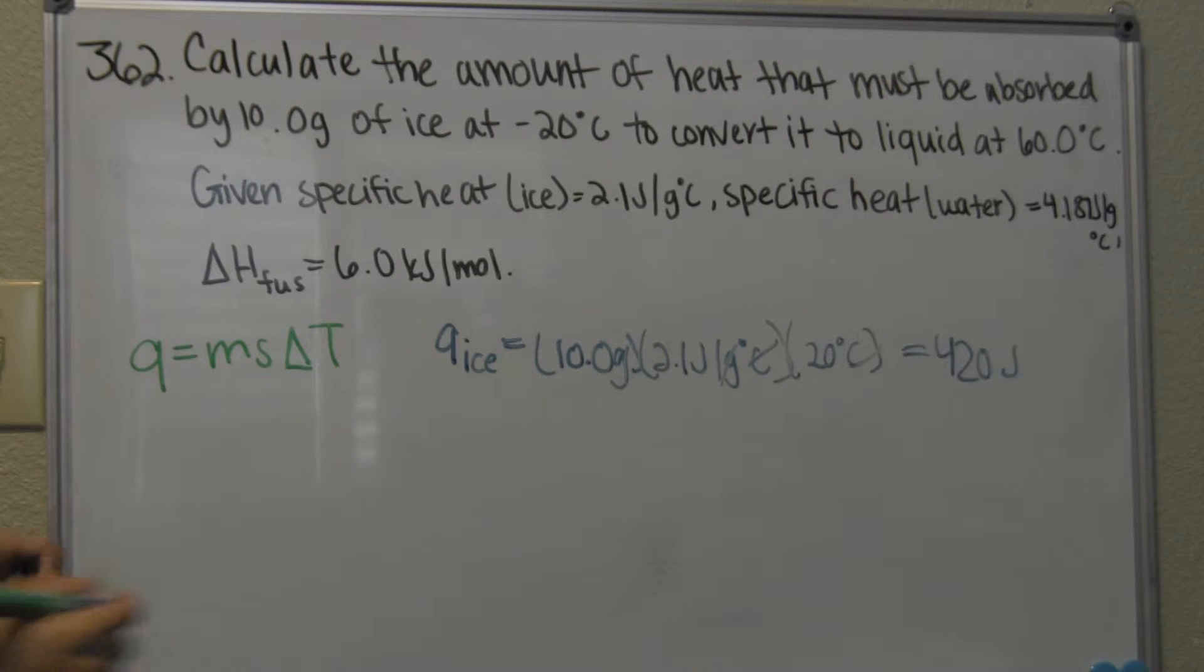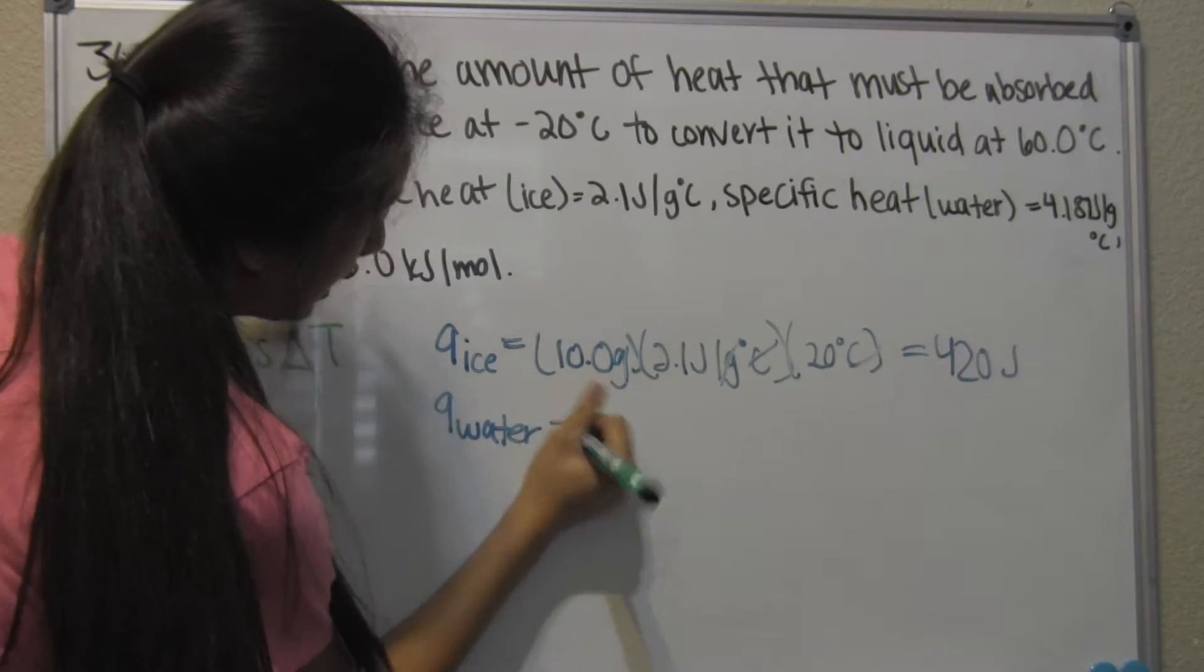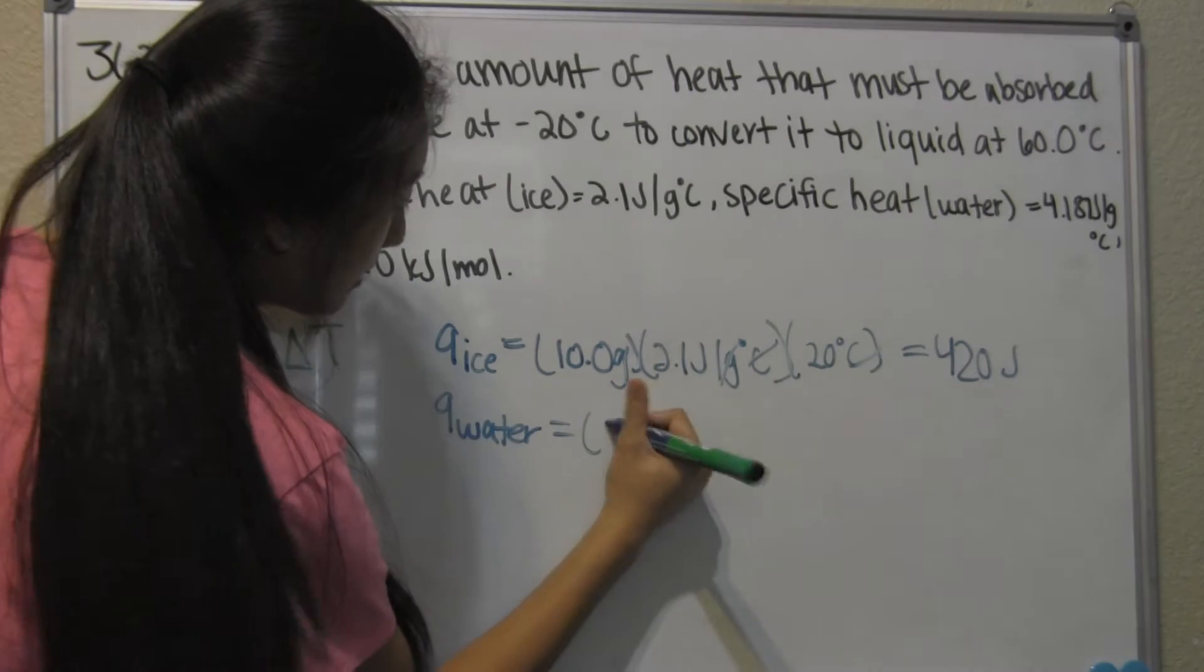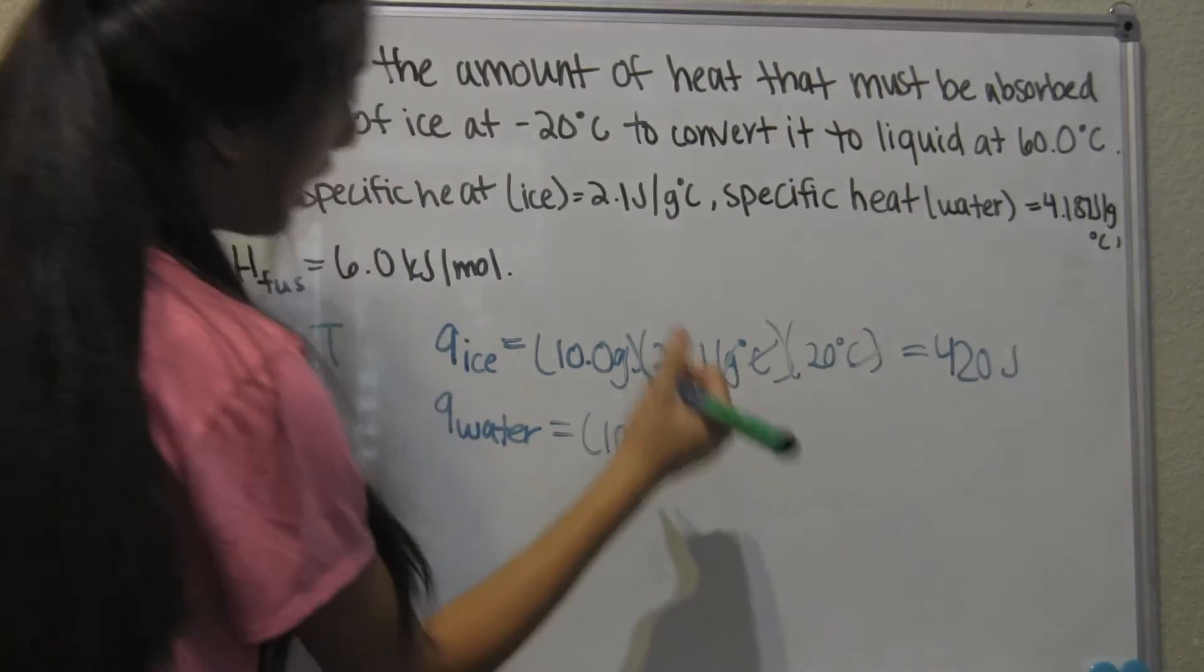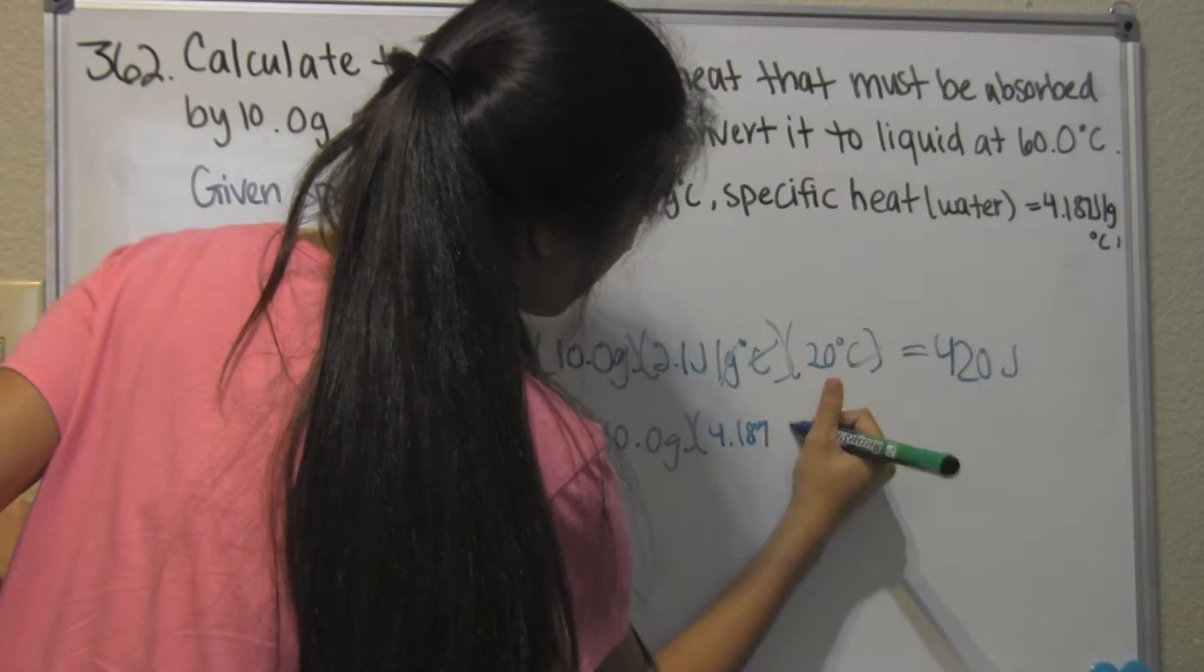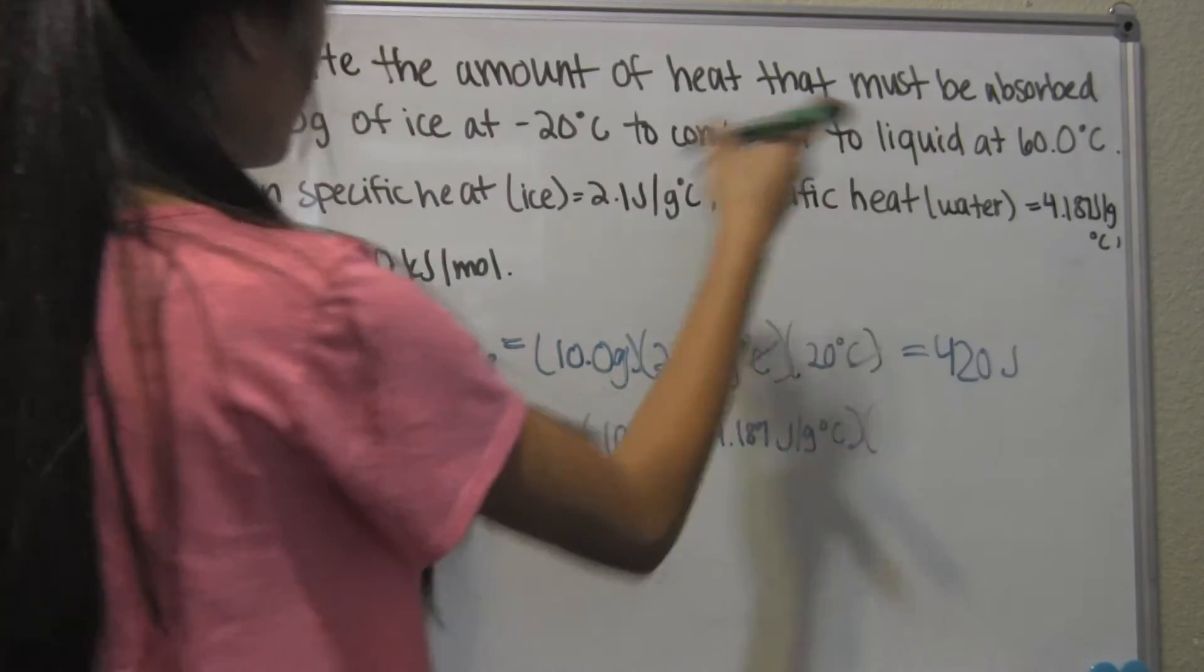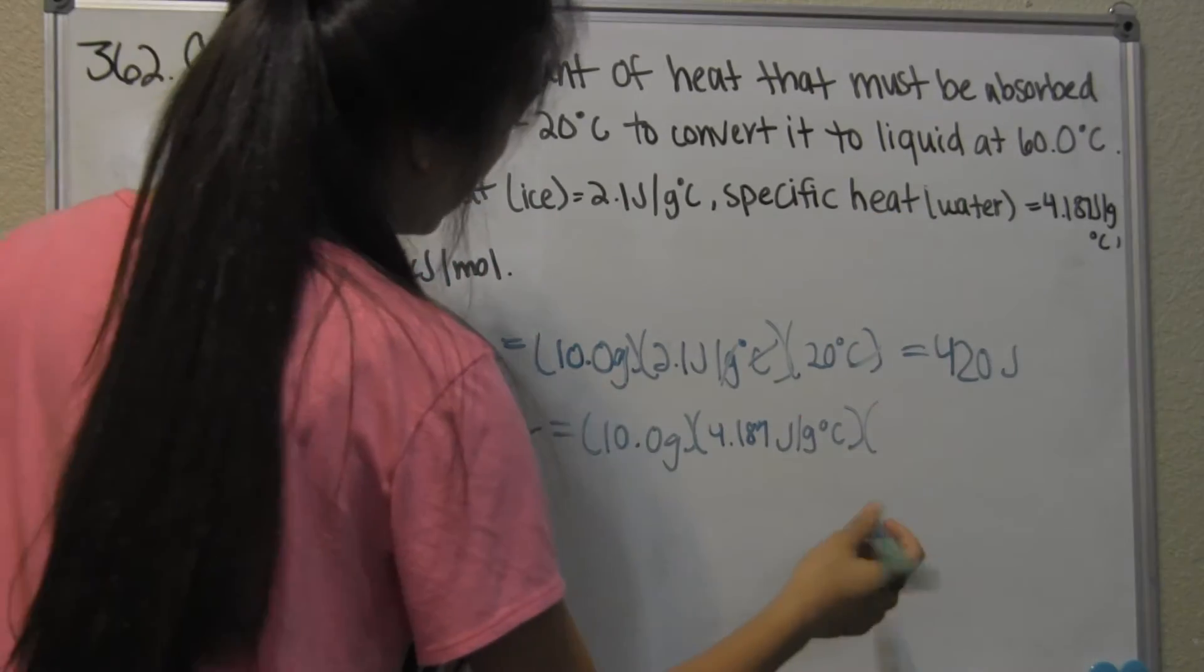Now we have to find the Q of water. It's going to be the same thing, 10.0 grams, times the specific heat for water, 4.187 joules per gram Celsius, and the temperature is going to be 60 degrees, since it's at the liquid phase, which is water.